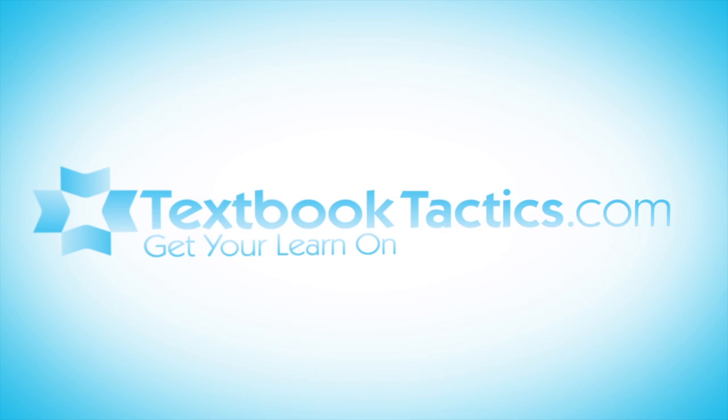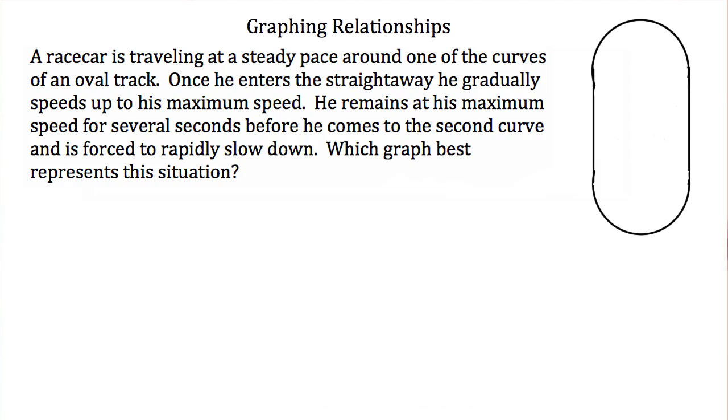This is a tutorial on graphing relationships. A race car is traveling at a steady pace around one of the curves of an oval track. Once he enters the straightaway, he gradually speeds up to his maximum speed.